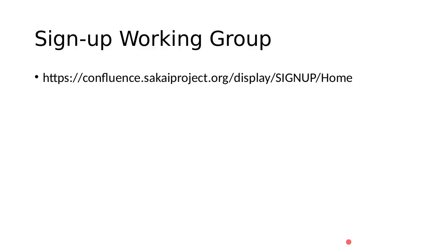Louisa points out in the chat that the attendance option is a nice feature that's already built into a core tool that many people may not know about. Jerry asks whether UVA has made any custom changes to the tool or is just using it out of the box. Tricia concurs that they are just using it out of the box — no custom changes have been made. So all of these features Tiffany showed you are available to everyone right now at no additional cost since you're already using Sakai.